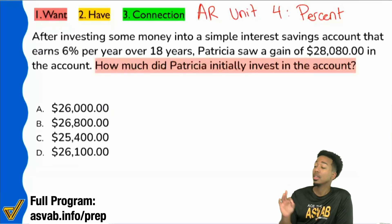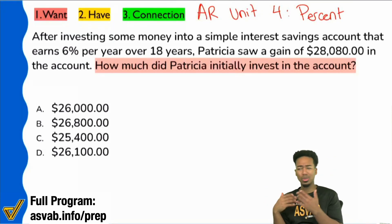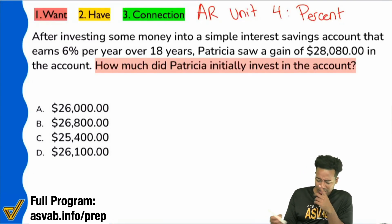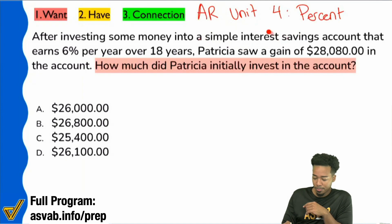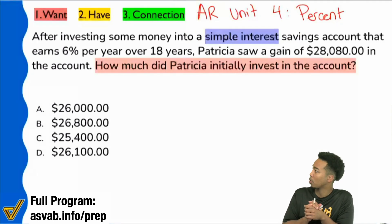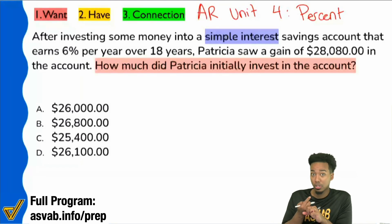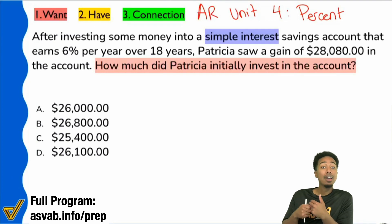We're on our way to success. The three steps - take these very slow and very seriously as you start off with practice. Eventually you'll be flying through it in real time. Step two: we're going to look at the information to see what kind of math is going on. After reading 'a simple interest savings account,' is 'simple interest' a specific math term? Yes, it absolutely is.